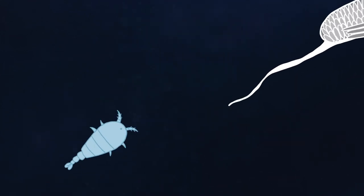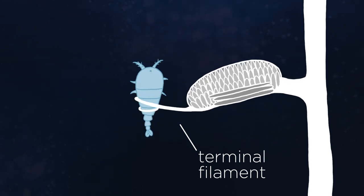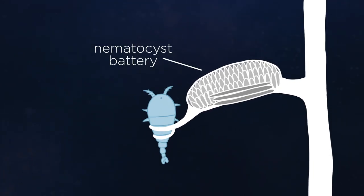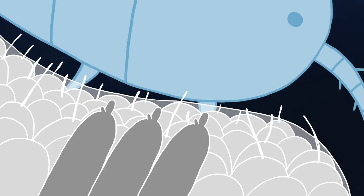When a small animal like this crustacean becomes entangled in the adhesive terminal filament, things start getting wild. The nematocyst battery rapidly unwinds and slings forward, wrapping around the prey as hundreds of nematocysts fire on it.